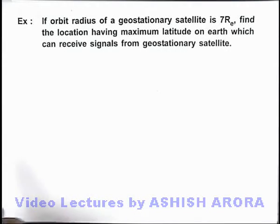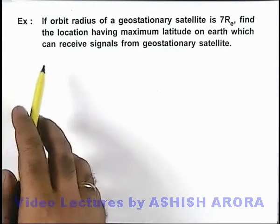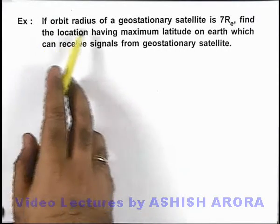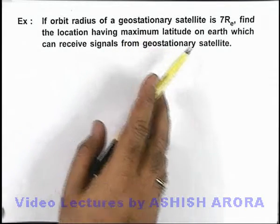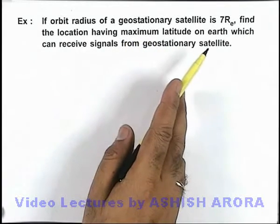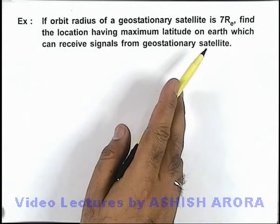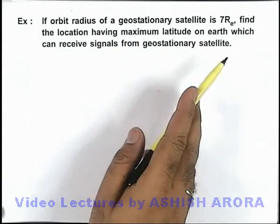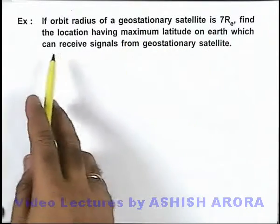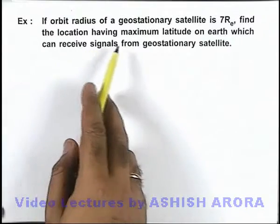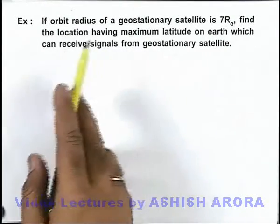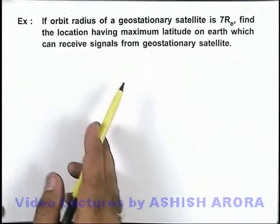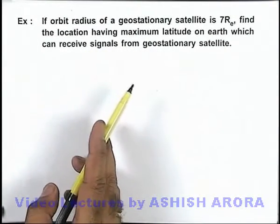In this example, we are given that the orbit radius of a geostationary satellite is 7 times the radius of Earth. We are required to find the location having maximum latitude on Earth which can receive signals from a geostationary satellite.